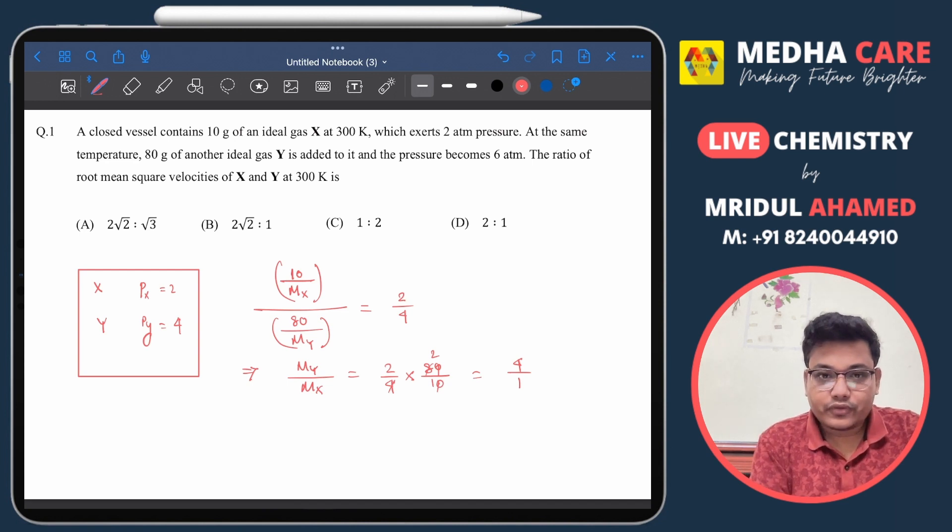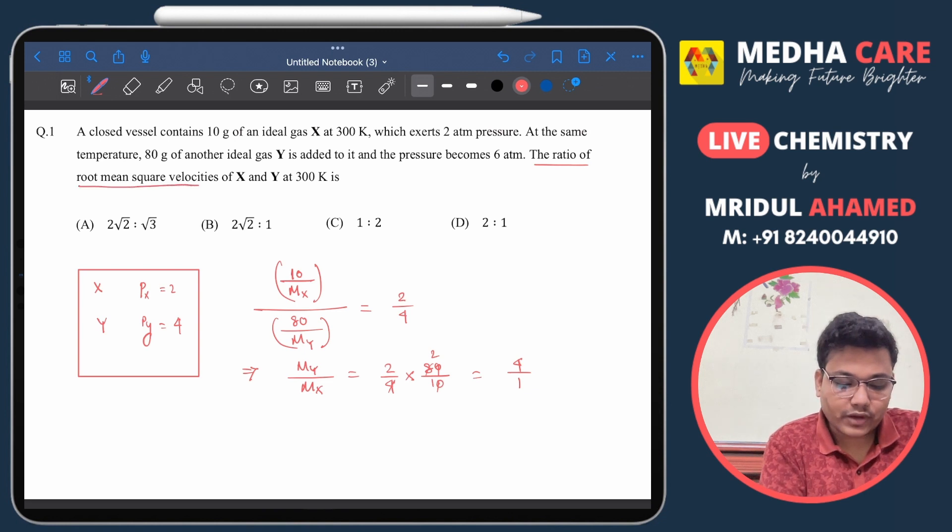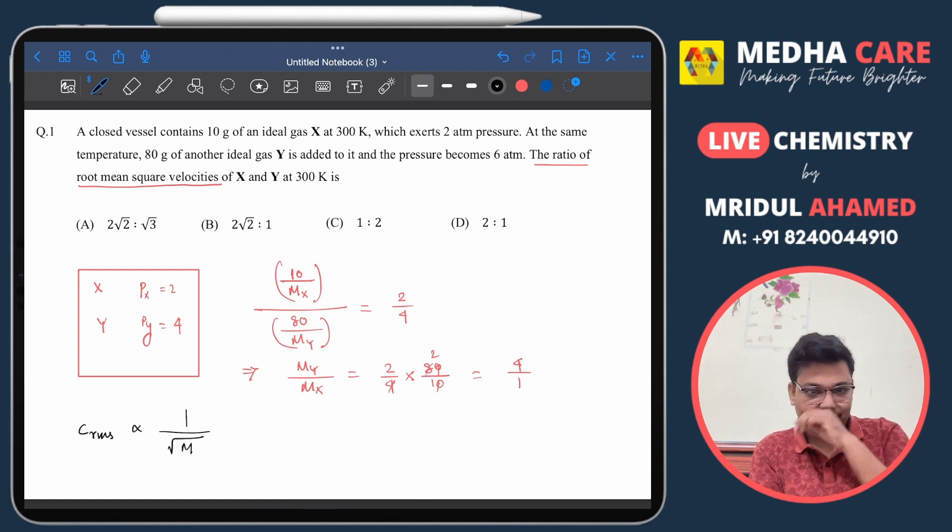Now what we have to find out here is the ratio of root mean square velocities. As you know, C_rms, root mean square velocities, are inversely proportional to the molar mass. So here we can get...